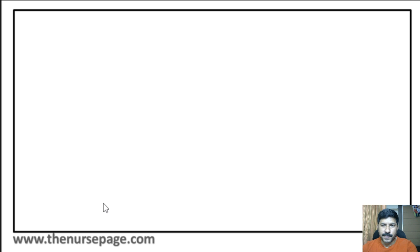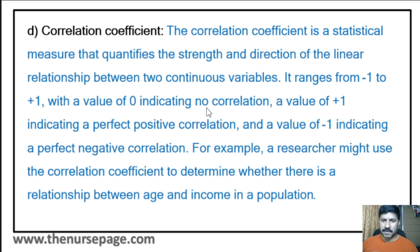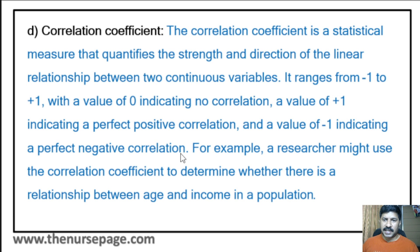Correlation coefficient is a statistical measure that quantifies the strength and direction of the linear relationship between two continuous variables. It ranges from -1 to +1, with 0 indicating no correlation. A value of +1 indicates a perfect positive correlation — if one variable increases, the other also increases in the same direction. A value of -1 indicates a perfect negative correlation — if one variable increases, the other decreases, meaning they are indirectly proportional.